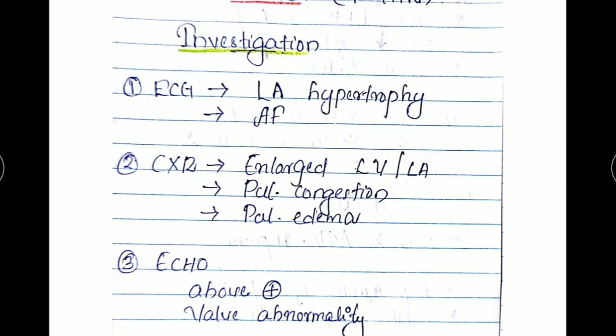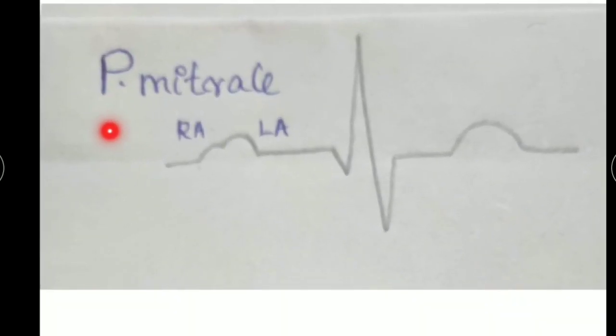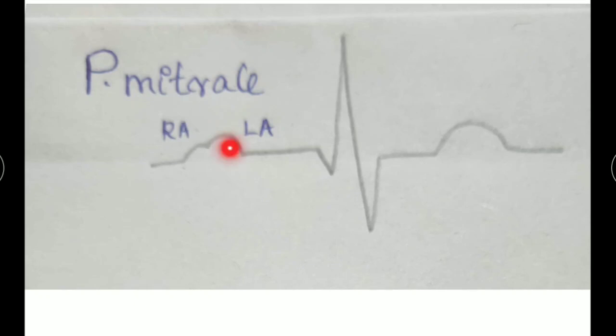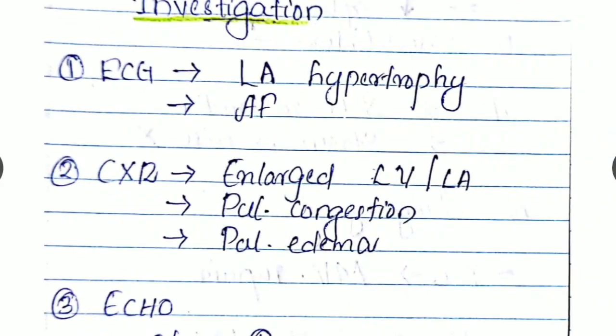On investigation, obviously first thing being ECG. We can elicit left atrial hypertrophy. This presents as P mitral, that is showing the enlarged left atria showing P mitral pattern. Also, features of atrial fibrillation can be elicited.